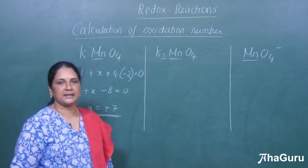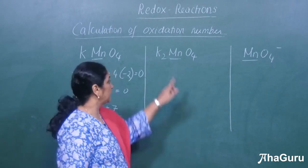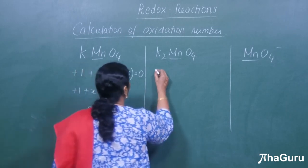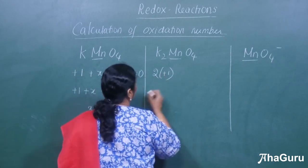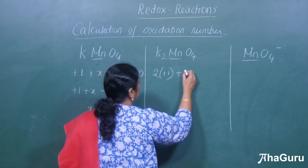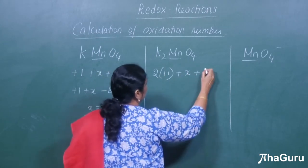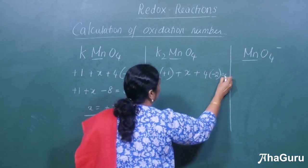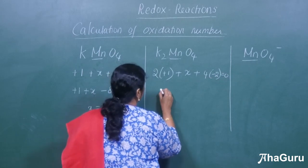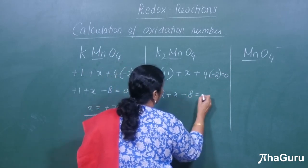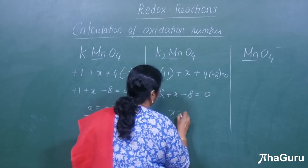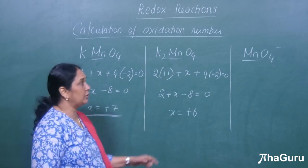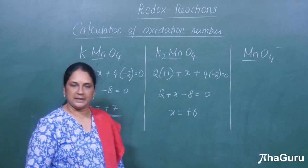Now let us take another example: K2MnO4. There are 2 potassium atoms here, and each takes a +1 charge, so 2 × (+1). We do not know manganese, so let us keep it as x. Oxygen is −2, and there are 4 oxygens: 4 × (−2) = 0. So: 2 + x − 8 = 0, giving x = +6. The oxidation state of manganese in K2MnO4 is +6.